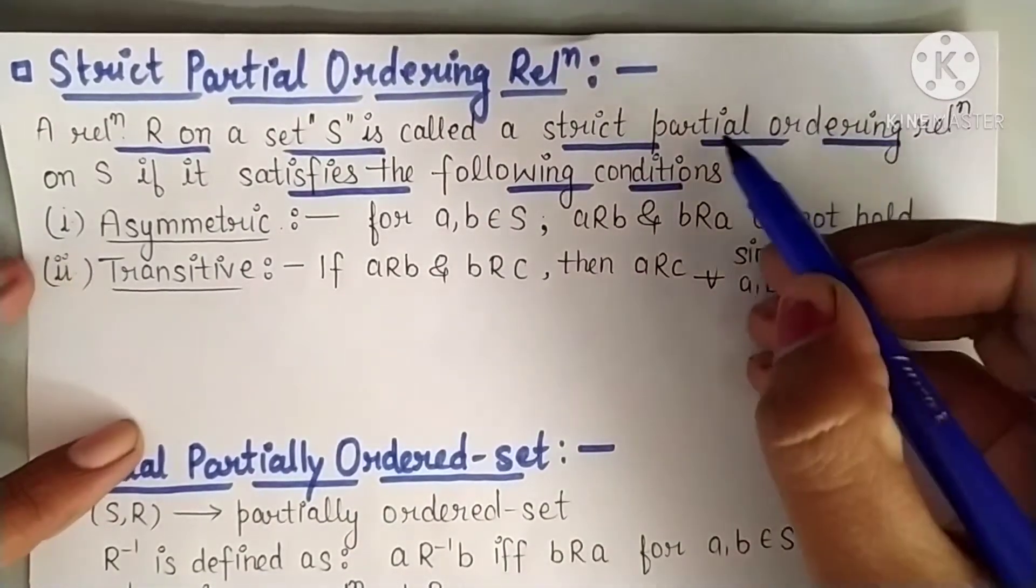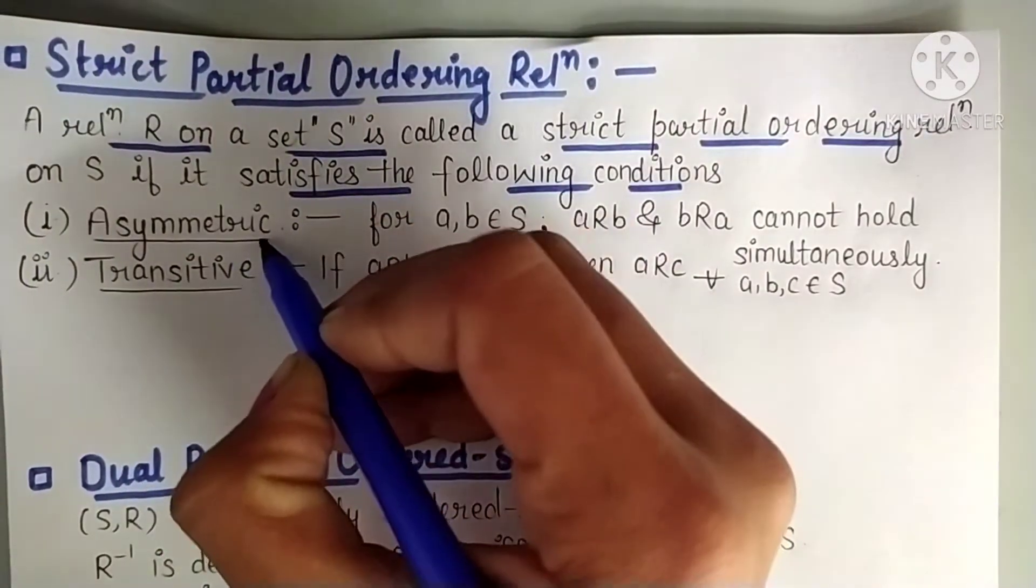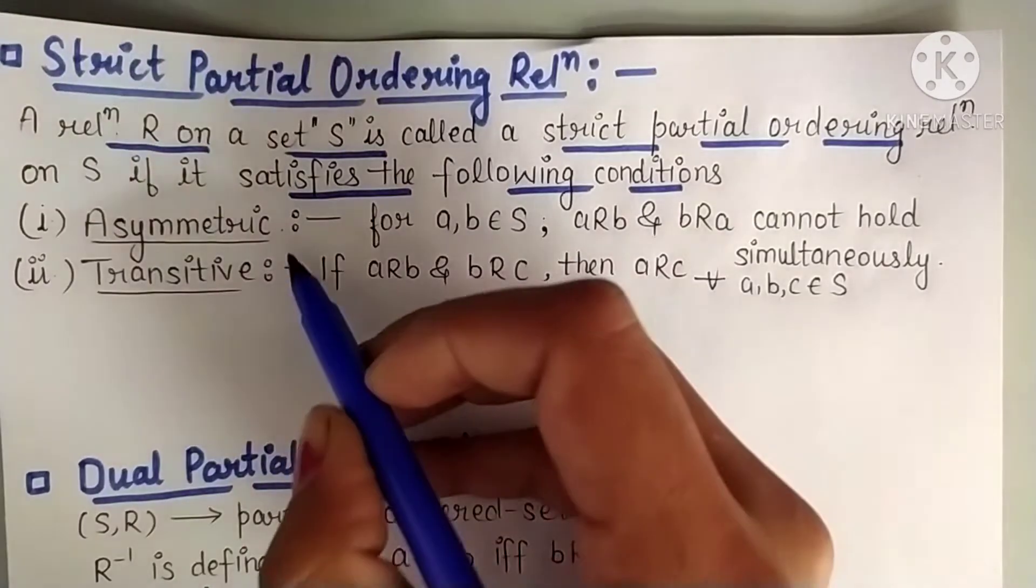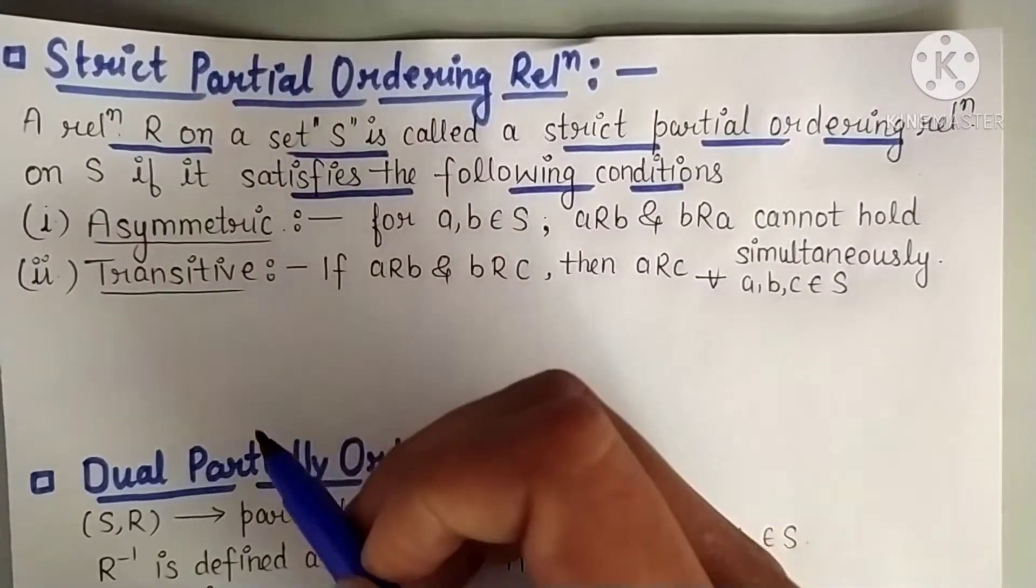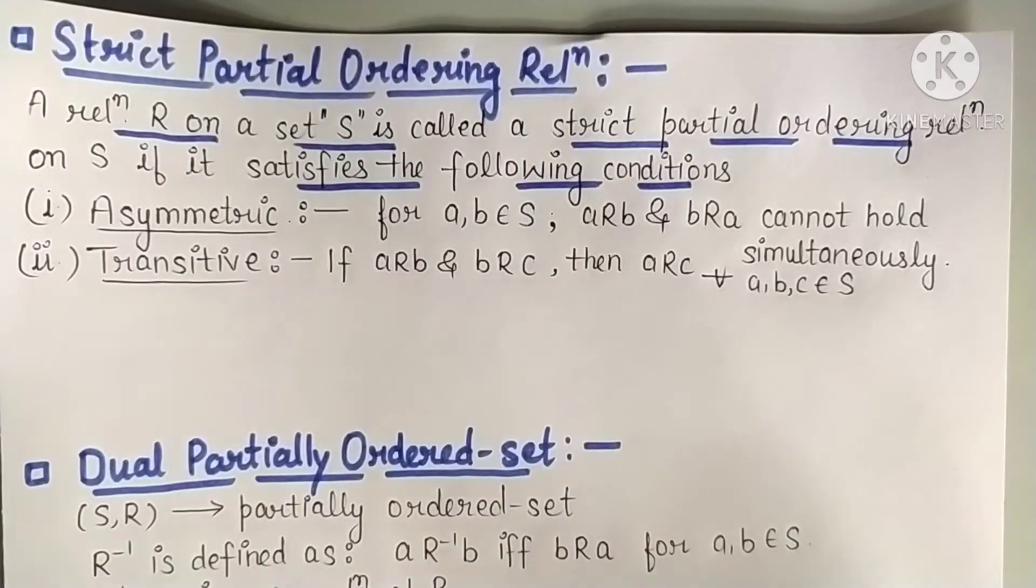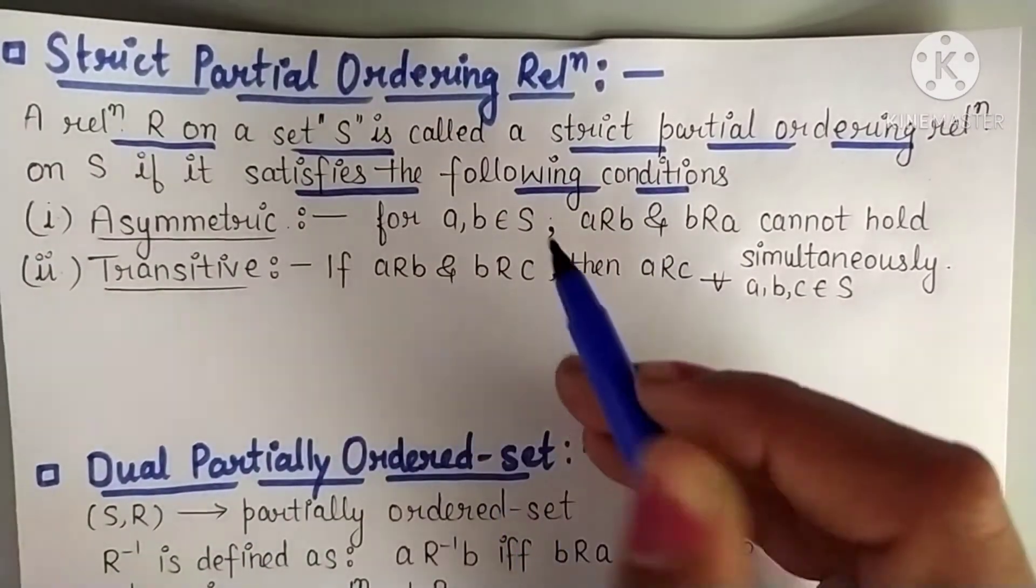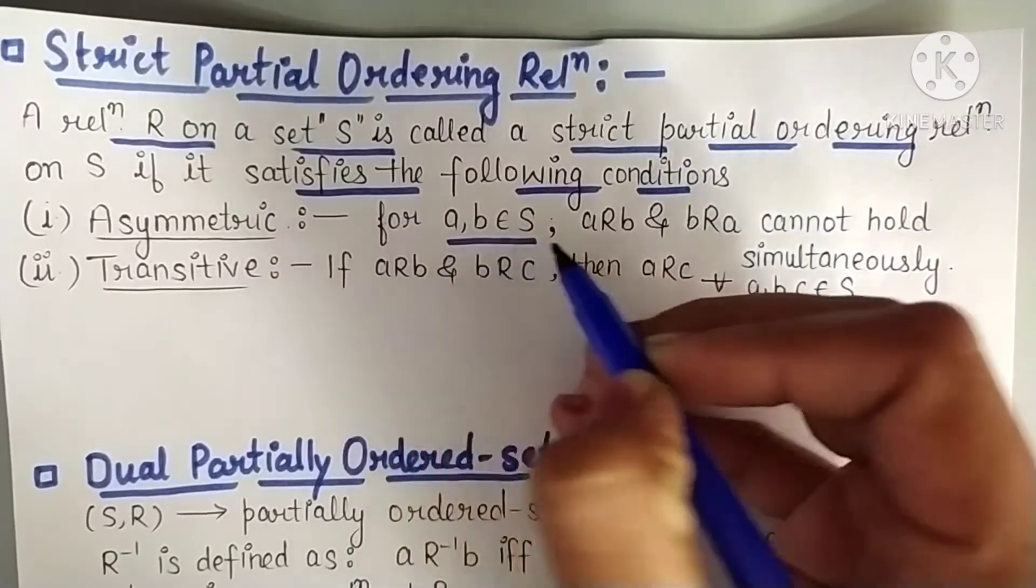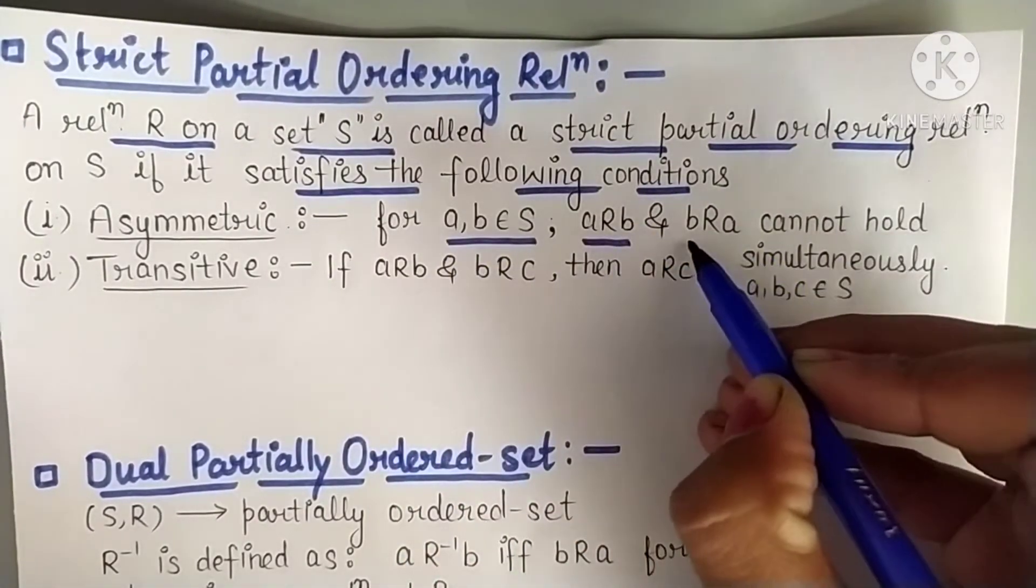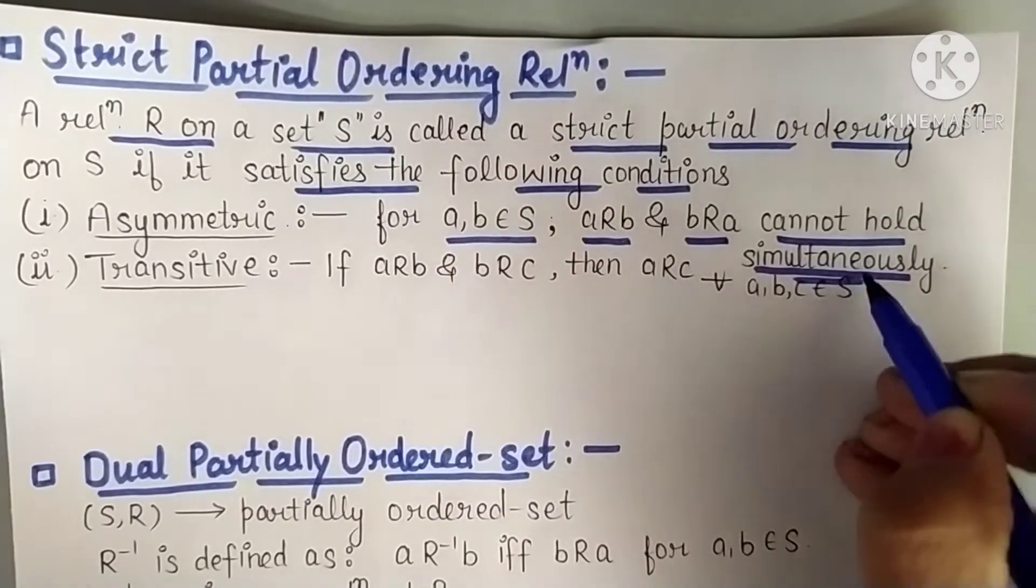Any relation is called strict partial ordering relation if it is asymmetric and transitive. It should be asymmetric and transitive, both conditions should hold. What is the meaning of asymmetric? We call any relation asymmetric if for any two elements a and b of the set, a related to b and b related to a cannot hold simultaneously. These two cannot happen together.